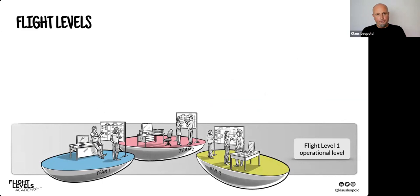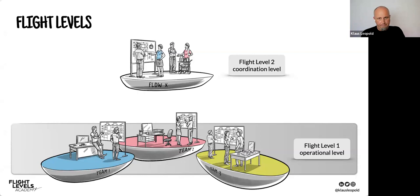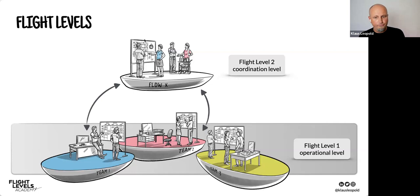Most of the time, one team alone cannot deliver 100% of customer value — multiple teams need to collaborate. That can't be solved on Flight Level One; we need to fly higher. Flight Level Two is the coordination level. Here we make sure the right team is working on the right stuff at the right time, connecting FL2 with the FL1 systems. Flight Level Two is the world of your products and services — everything that delights your customers.